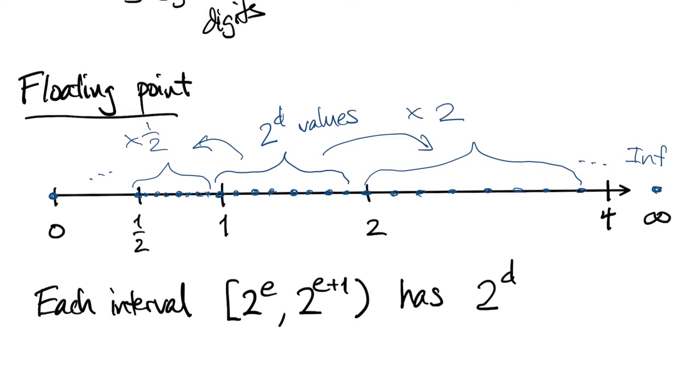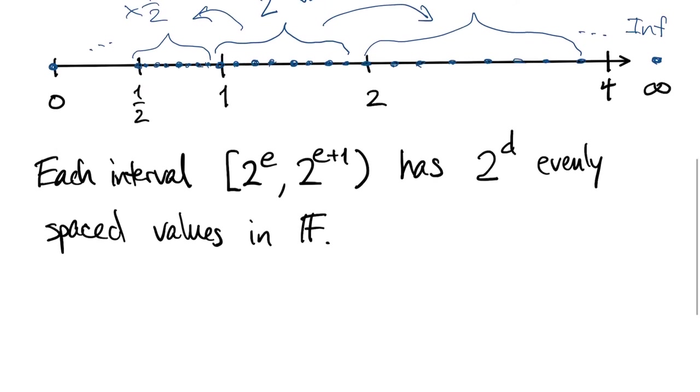So, to summarize the situation, in each interval between a power of 2 and the next one, we have 2 to the d equally spaced values.